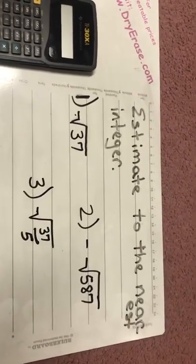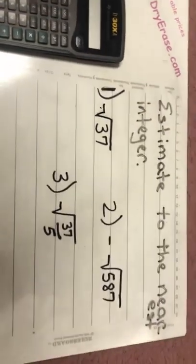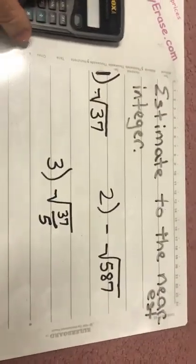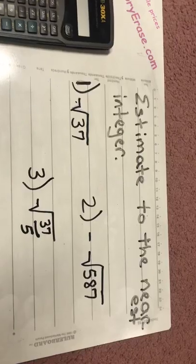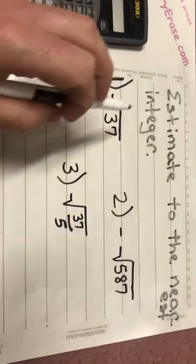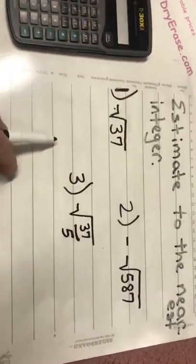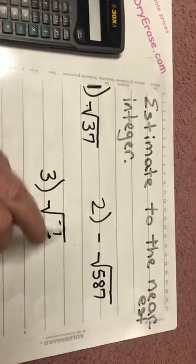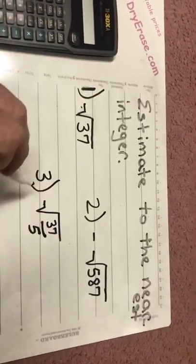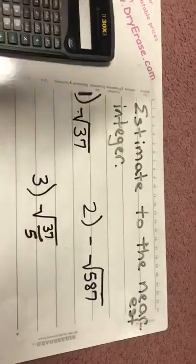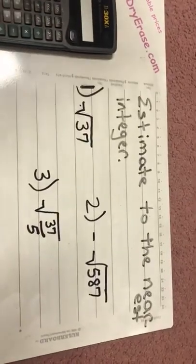We are going to be able to zoom right through this. This is not going to be difficult at all for you. We're looking at estimate to the nearest integer. Basically all we want to do is round these to the nearest whole number, integer, negative, positive, whatever.